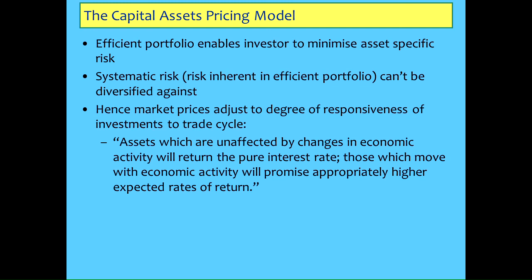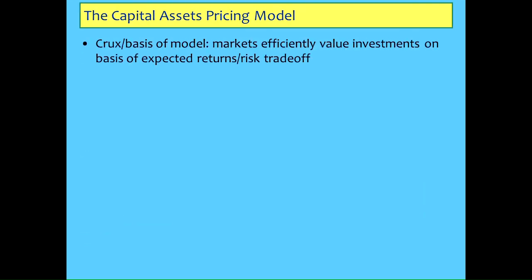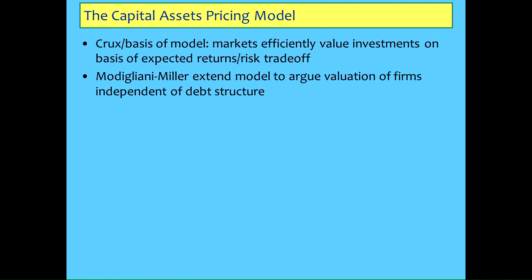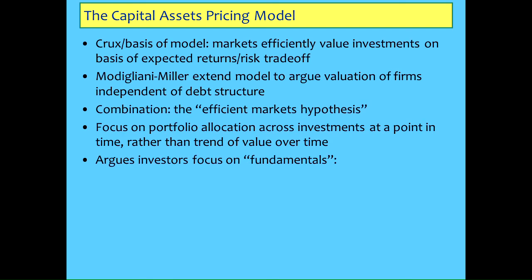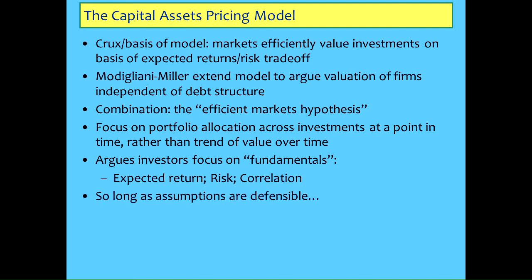Prices for shares are just down to how responsive those shares are to the trade cycle. Assets which don't vary at all - the same rate of return no matter what, either a boom or a bust - they're going to give you the riskless rate of return. Ones which give you a bigger return during a boom but worse during a slump will give you higher rates of return but higher volatility as well. So it's the whole risk-return trade-off, and you get the argument that you can value a firm independent of debt level using Modigliani-Miller. Investors focus on fundamentals, simply looking at risk-return trade-offs and choosing the best one for their overall desire for returns and their own personalities.